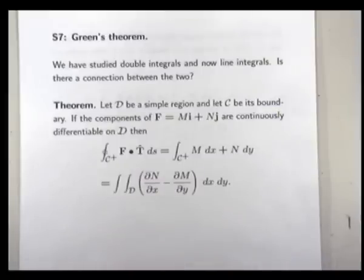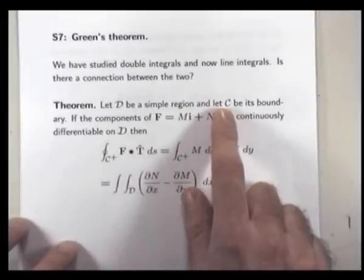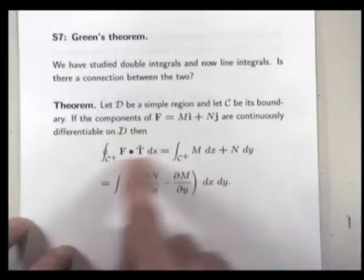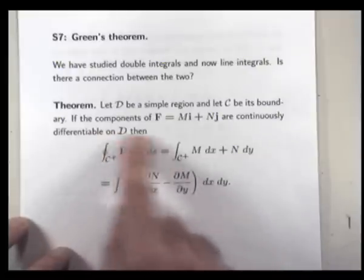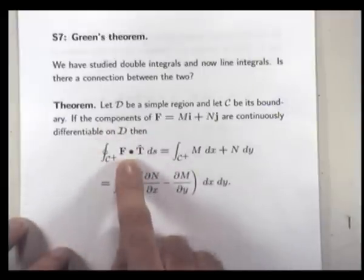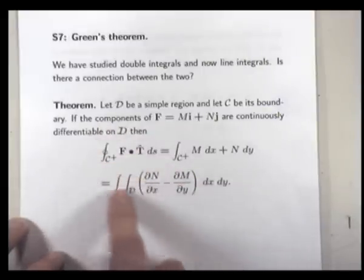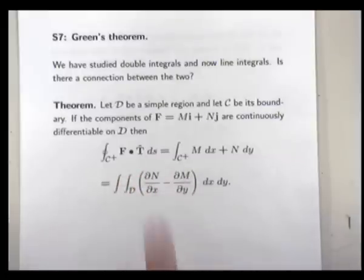So what's the connection? Well, because C is a closed curve, curly C, this here is the line integral, right, around C. This here is the double integral of the scalar curl, the scalar curl of F.